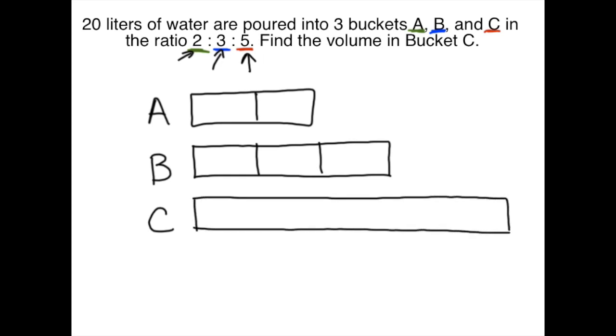And I'm going to want them to match up and be the same size as the other units as well. Now I'm told that 20 liters are poured into three buckets. So that means I'm going to want to add a bracket and label all three 20 liters. And I want to find the volume of bucket C, so I'm going to write a question mark there.